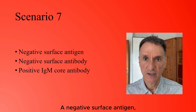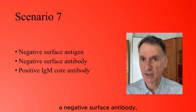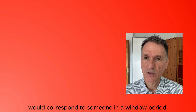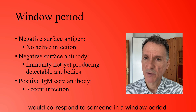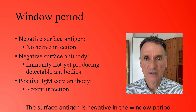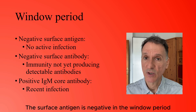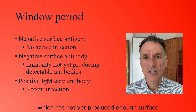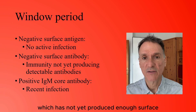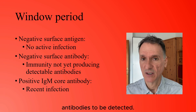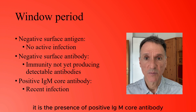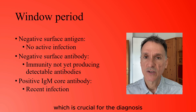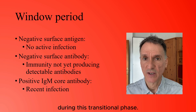A negative surface antigen, negative surface antibody, and positive IgM core antibody corresponds to someone in a window period. The surface antigen is negative in the window period because it has been cleared from the bloodstream, and the immune system has not yet produced enough surface antibodies to be detected. In this case, the presence of a positive IgM core antibody is crucial for the diagnosis during this transitional phase.